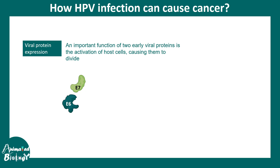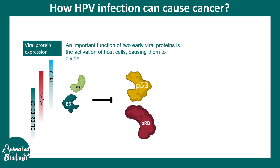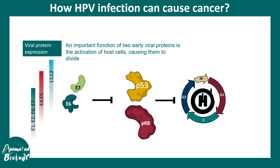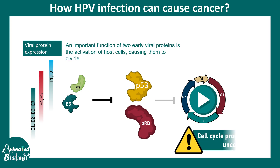This virus has specific viral proteins such as E7 and E6, which are known to suppress tumor suppressor proteins such as P53 and PRB. In normal scenarios these proteins prevent uncontrolled division and growth, but when they are inhibited the cell cycle goes haywire, resuming abruptly and leading to cancer development.